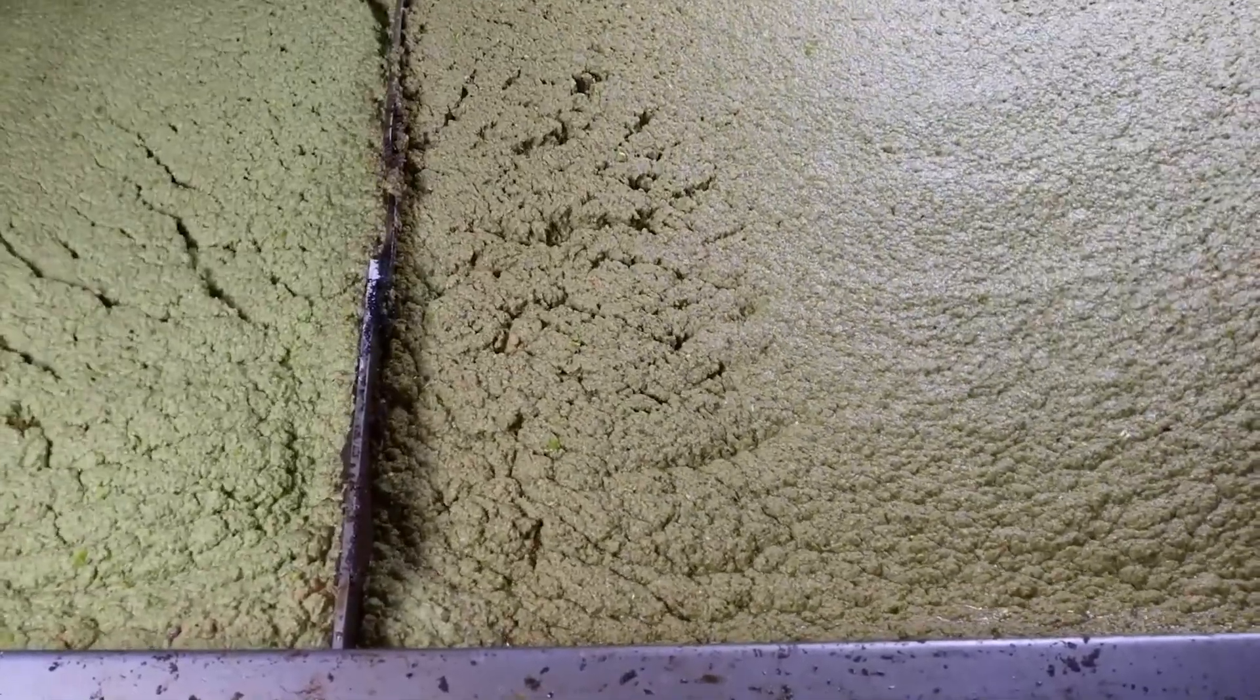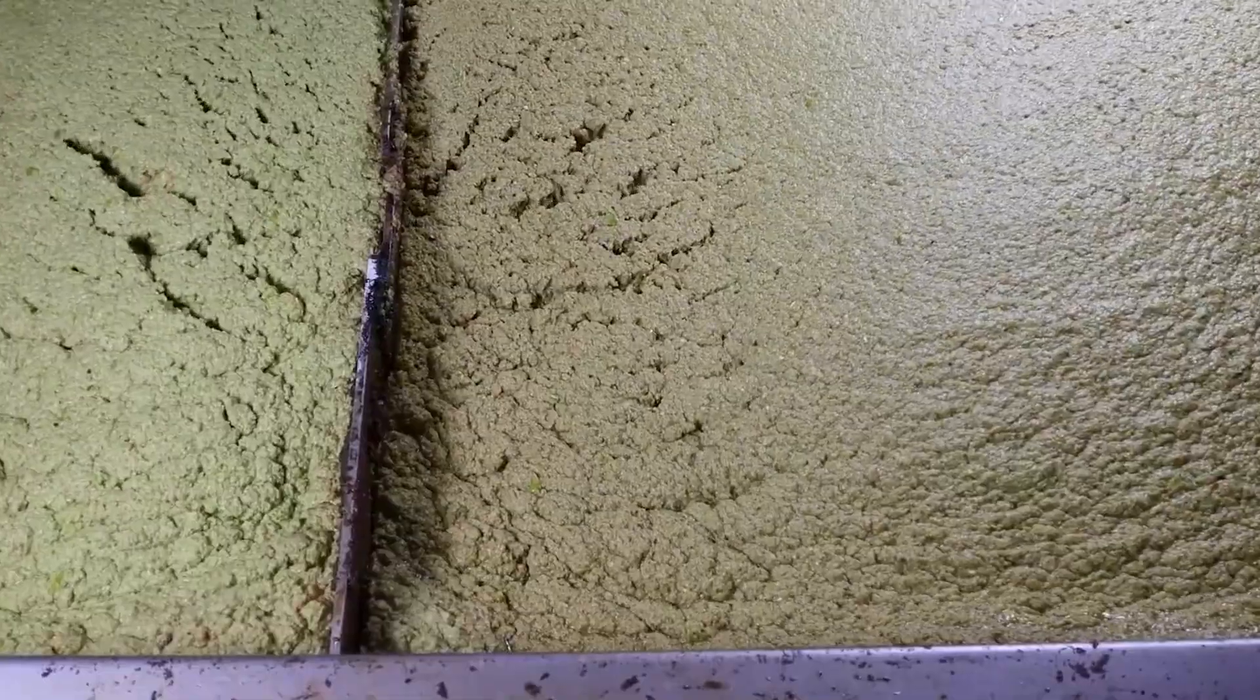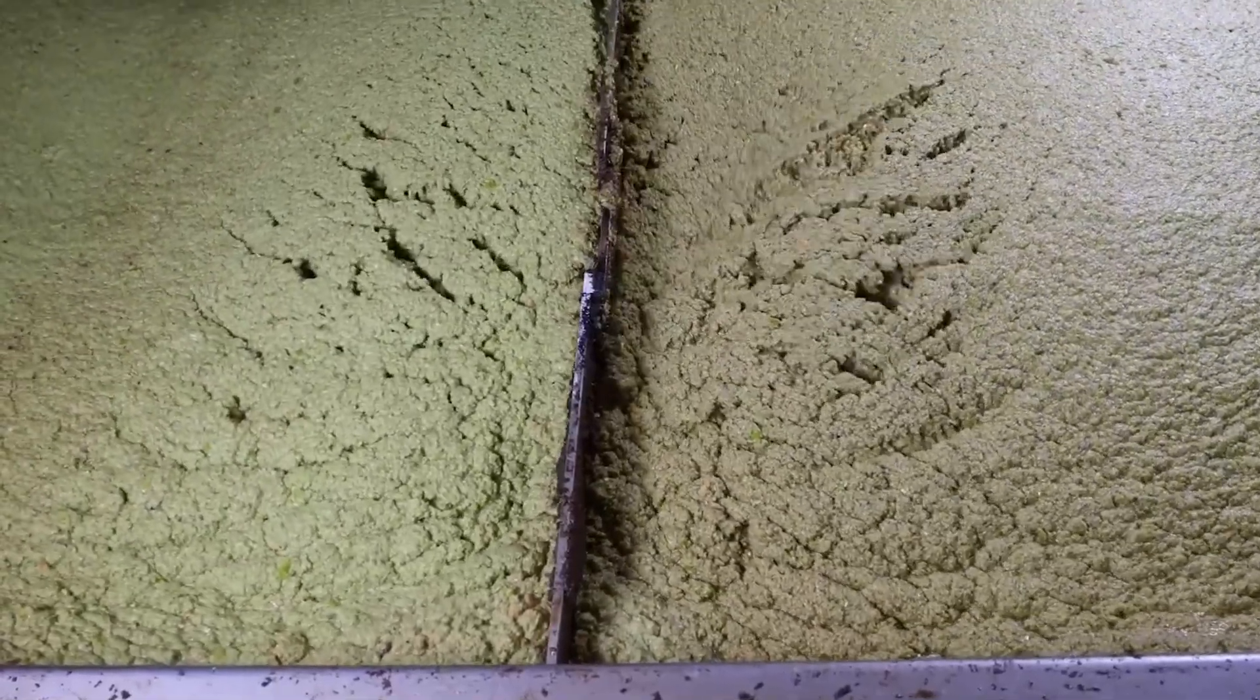Modern factories use stainless steel crushers or hammer mills. Faster, cleaner, and more consistent. Out comes a greenish-brown olive paste—thick, sticky, and full of potential.